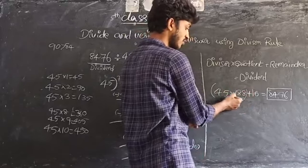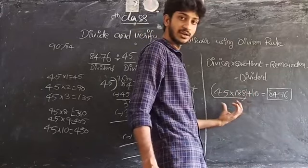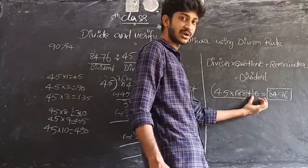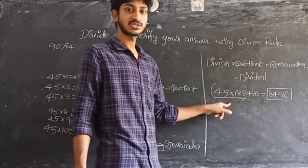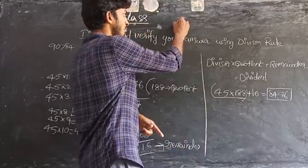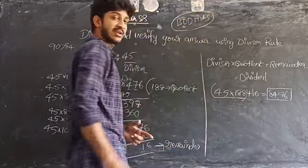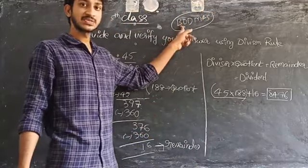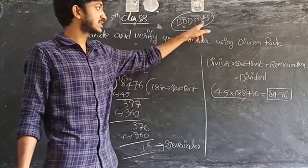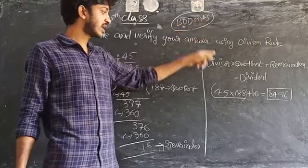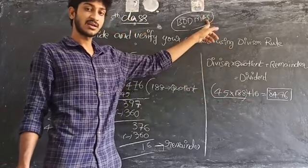First of all we have to do the multiplication: 45 into 188. After that we get a product and we add that product to 16. What is the rule? This is the order of operations — first brackets, then division, multiplication, addition, subtraction. So here we have multiplication and addition, so we solve multiplication first and then addition.